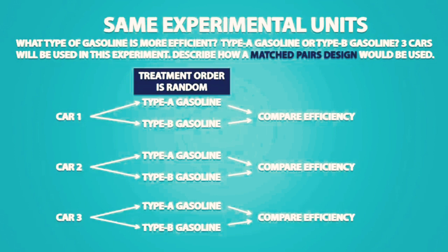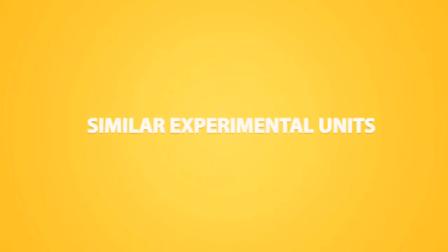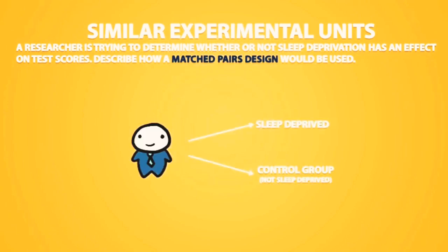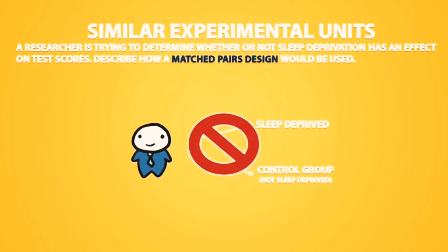There are cases when we can't use the same experimental units for a matched pairs design, and we would have to use similar experimental units. For example, a researcher is trying to determine whether sleep deprivation has an effect on test scores. We could try giving both treatments to the same experimental units — having the same person write the test on two different days, one being sleep deprived and the other with sufficient sleep. The problem is that the same subject can't write the same test twice because they would know what's on the exam the second time.